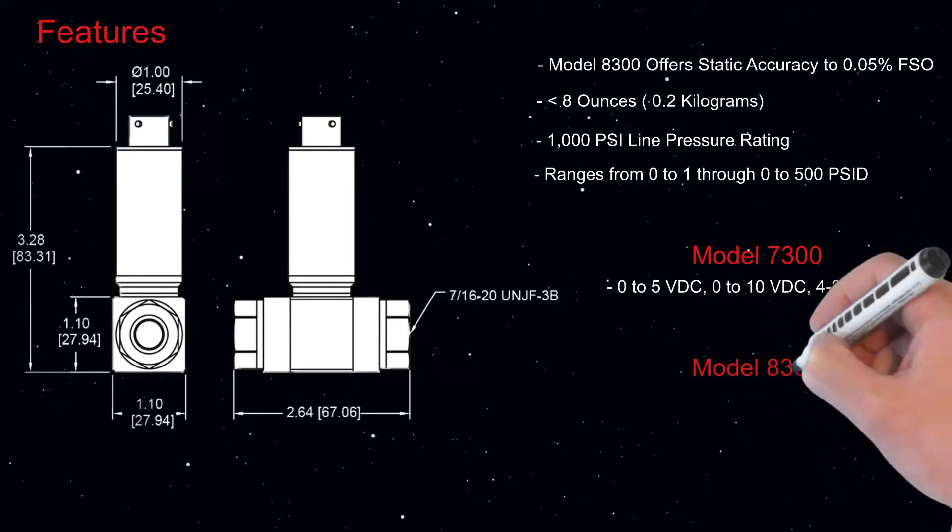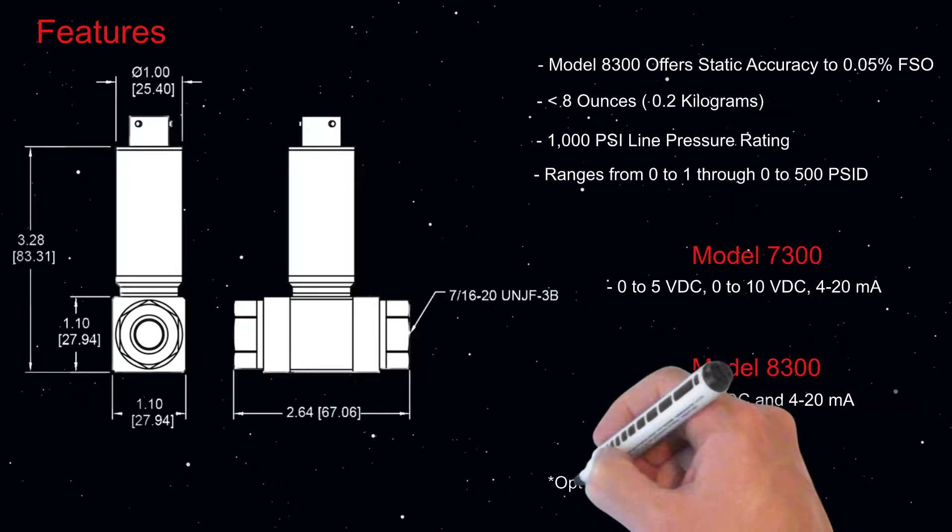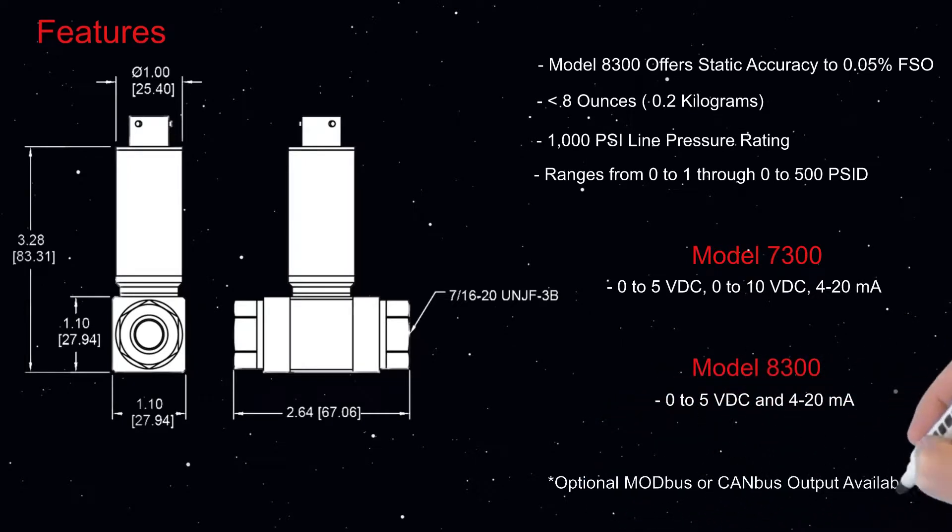The Model 8300 comes in 0 to 5 VDC and 420 mA. Optional Modbus or CANbus digital output is also available.